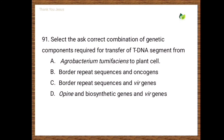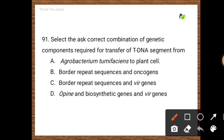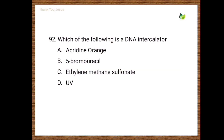Next question: Select the correct combination of genetic components required for the transfer of T-DNA segment from Agrobacterium tumefaciens to plant cell. Options are border repeat sequences and oncogenes; border repeat sequences and vir genes; opine biosynthetic genes and vir genes; opine biosynthetic genes and oncogenes. The correct option is the second one — border repeat sequences and vir genes.